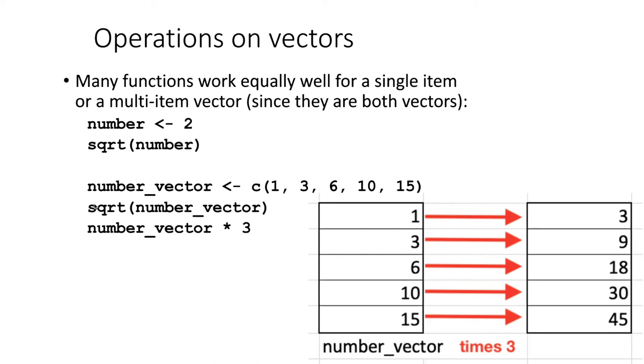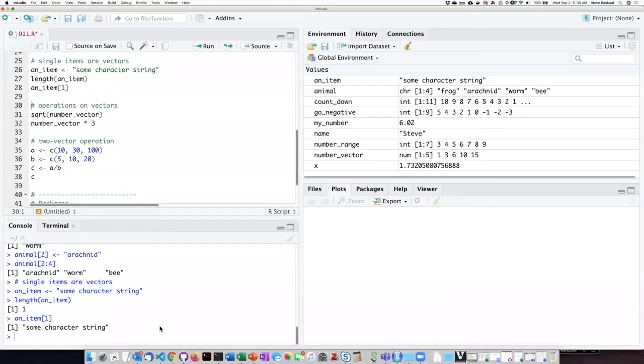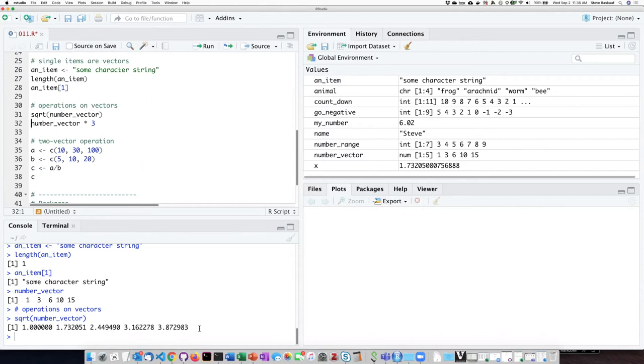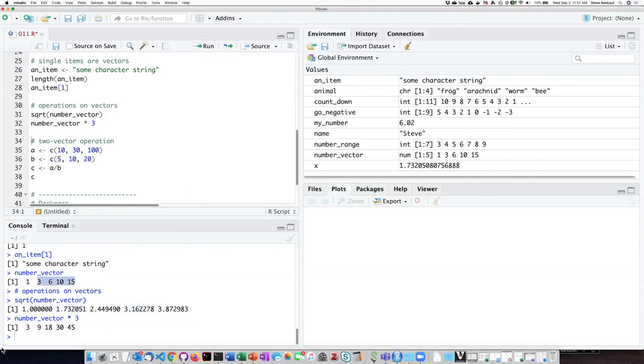It's going to give me a result that is all of the numbers squared. In the console window, I'm going to type number vector just to remind ourselves what is in number vector. If I perform the square root function on the number vector, then I see that it's provided me with the square root of all five of the numbers here. If I multiply number vector by three, then it's taken all five of these numbers and multiplied them by three. So if the thing that I put into the function or do the operation on is a vector with five items, then the answer that I get is also going to be a vector with five items.